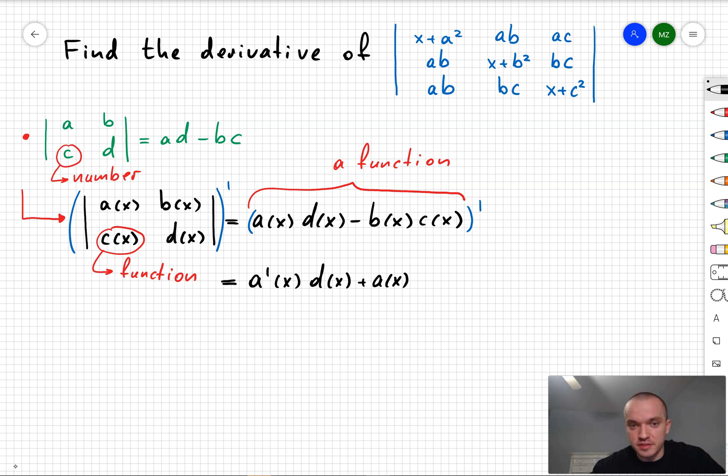So I'm going to obtain A prime of x times D of x plus A of x times D prime of x, which is like first product rule.